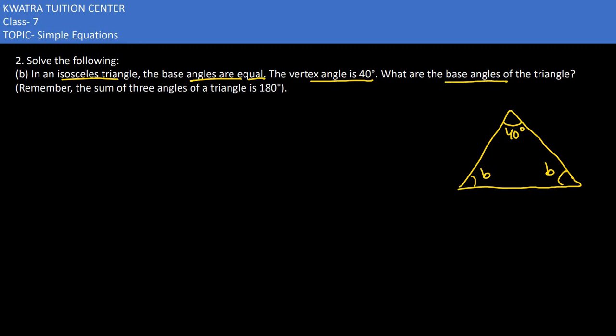We know that the sum total of all angles would be equal to 180 degrees. So 40 plus b plus b would be equal to 180.